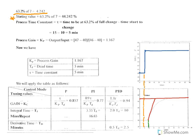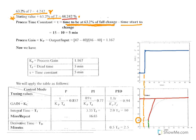What you do with this number is add it to the starting point of the output. The starting point is 40. So the value at 63.2% of the total change is 40 plus 4.242, which equals 44.242. The process time constant equals the time to reach 63.2% of the total change minus the time the change started.